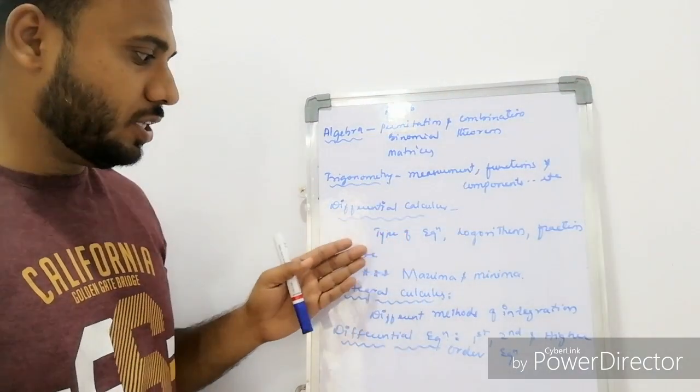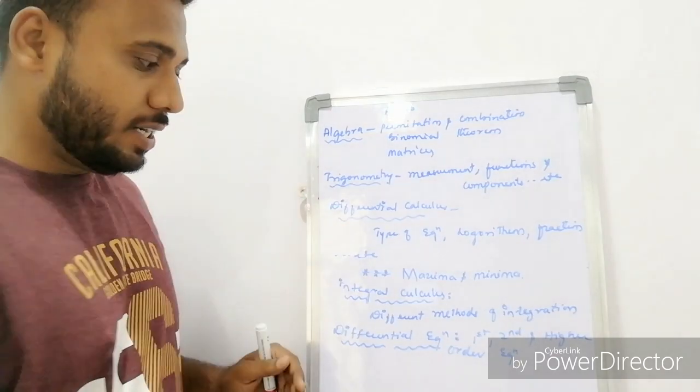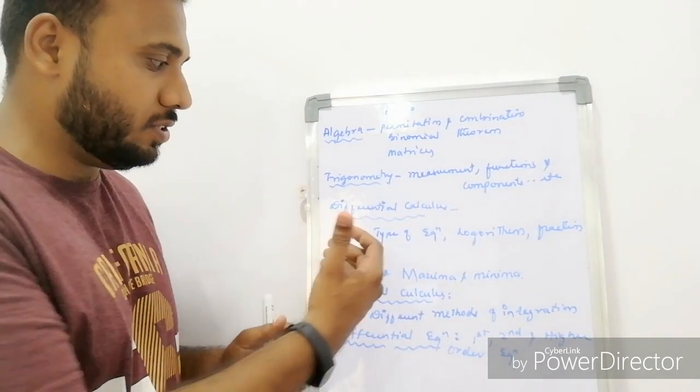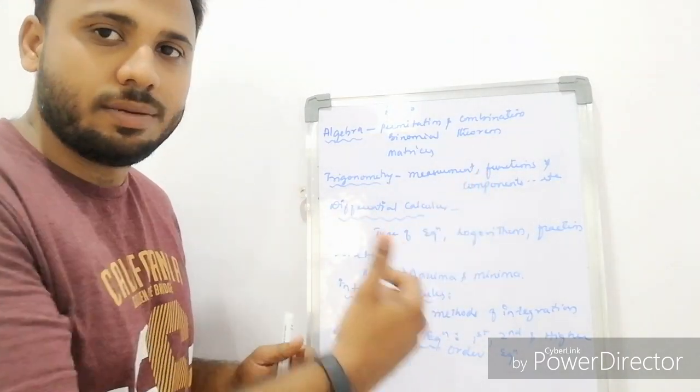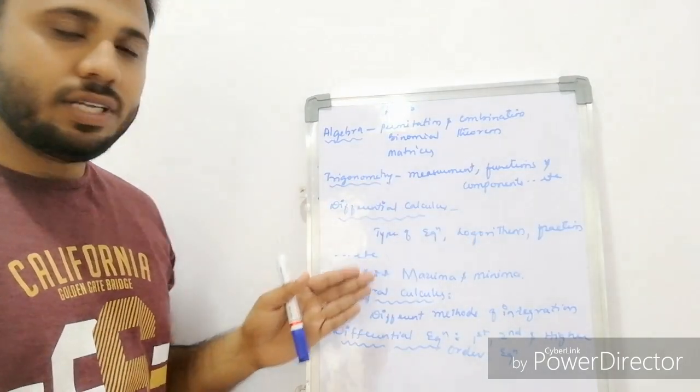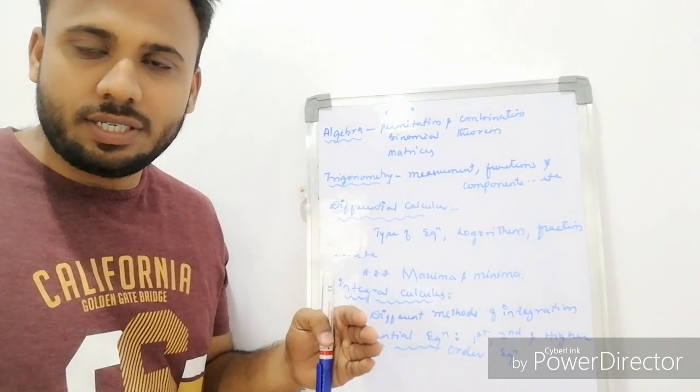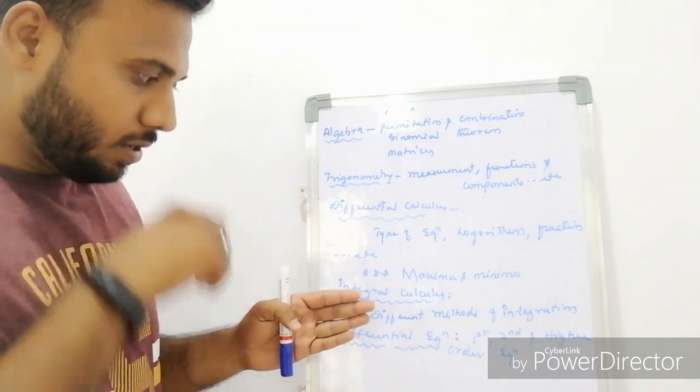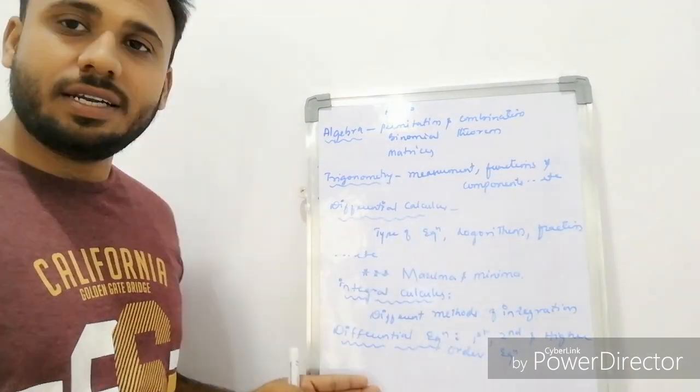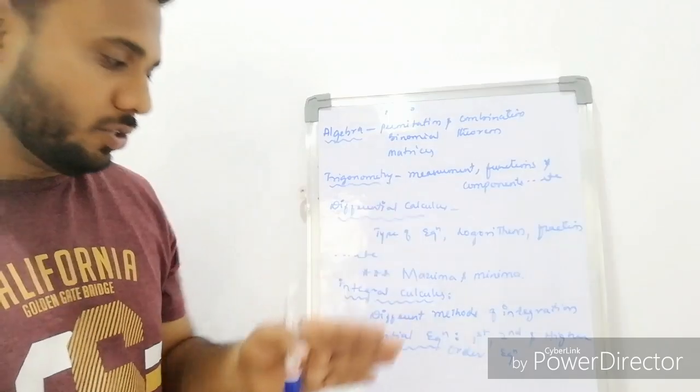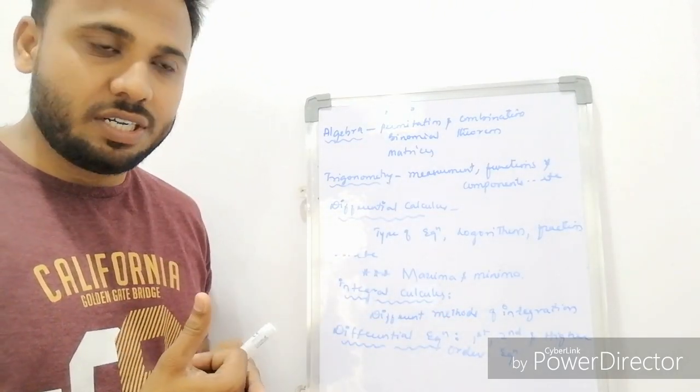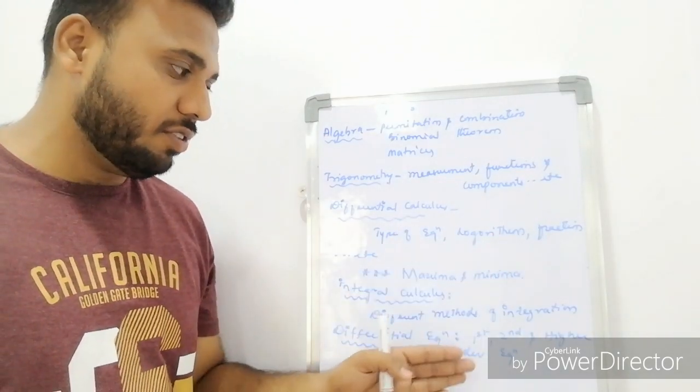Like differential calculus. In differential calculus, the main important topic is maxima and minima. Then, there are different types of equations in the differentiation. And for the logarithm and the fractions, there are types of differential equations. Next, coming to the integration. Integration consists of a huge lengthy unit which consists of different methods of integrations. Now, coming to the last and final unit which is present in R09 and R13 also. Differential equation, which consists of exact differential equation, binomial differential equation, and first to second and higher order differential equation.